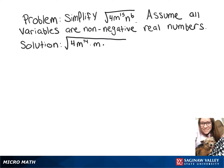And then we're going to leave n to the 6th alone. And that's because the square root is like raising exponents to the 1 half power. So we can divide our exponents by 2.